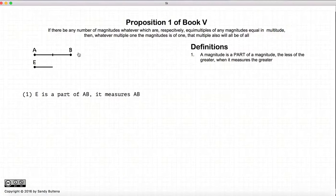If we have a line AB and a line E, such that E fits into AB an integer number of times, then E is a part of AB and it measures AB.